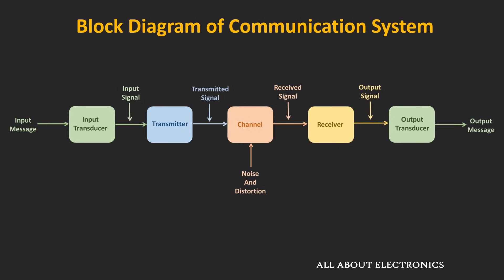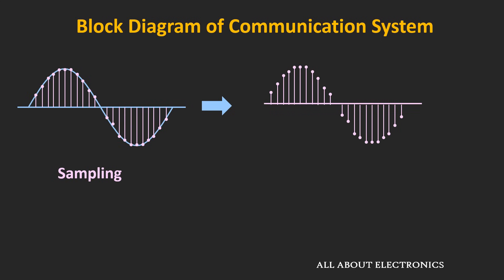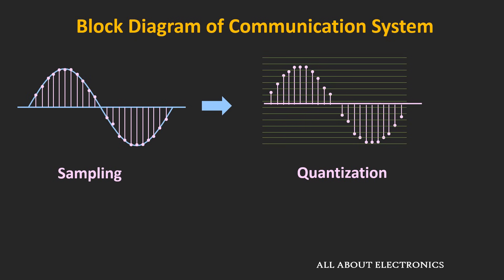This transmitter modifies the input signal for efficient transmission. The transmitter module contains several subsystems like the modulator, analog-to-digital converter, and encoder, and many times it also contains an amplifier system. For example, if the signal is analog and needs to be converted into digital form, it is first sampled at regular intervals, then quantized, and using the ADC it is converted into digital form. It can then be encoded in a particular format using the encoder.